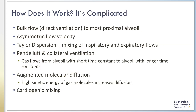A more complicated view of high-frequency ventilation reveals that gas exchange is affected by many different properties. The most proximal alveoli in the respiratory system may experience some bulk flow, similar to ventilation provided by conventional ventilators. Asymmetric flow velocity is a large source of gas exchange — essentially the simplified example from the previous slide. As the flow wave gets distorted further down the airway, it causes the gas at the center to flow into the lungs, whereas gas at the edge gets slowed by friction at the airway walls, leading to a net flow out of the lungs along the edge of those airways.